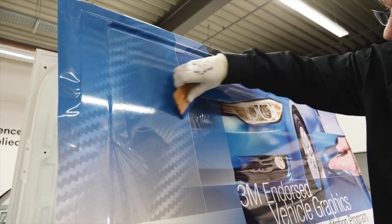If wrinkles appear, apply heat and let the film cool down. Then continue squeegeeing with overlapping strokes.